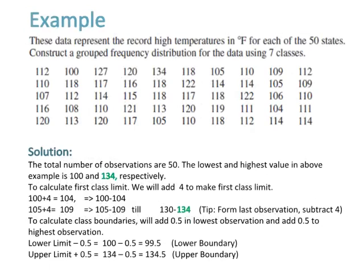Example: these data represent the record high temperatures in Fahrenheit for each of the 50 states. Construct a grouped frequency distribution for the data using seven classes. The total number of observations are 50. The lowest and highest values are 100 and 134, respectively.